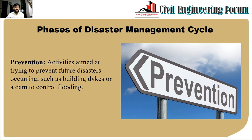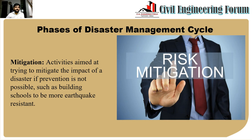If we are aware of an approaching disaster, we can shift to another place, stay inside the house during a cyclone, or call emergency services in advance. In this way, we can try to prevent the disaster. This is the first stage of the disaster management cycle.